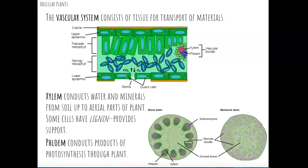Within the cross-section of the plant is what we call the vascular bundle, which contains two types of structures: xylem and phloem. Xylem conducts water and minerals from the soil up to the aerial parts of the plant, and some cells also have lignin, which helps provide structural support. Phloem, on the other hand, conducts products of photosynthesis — sugars — down through the rest of the plant. So xylem pulls water and minerals up to the leaves, while phloem distributes photosynthesis products to other structures in the plant.